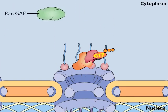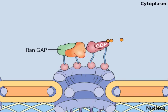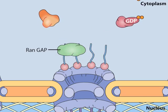A protein in the cytoplasm called RAN-GAP, for GTPase-activating protein, stimulates RAN to hydrolyze its GTP to GDP, an action that triggers RAN to release importin back into the cytoplasm.